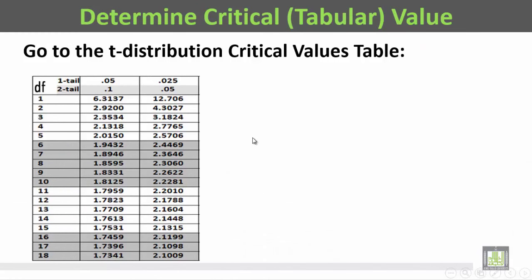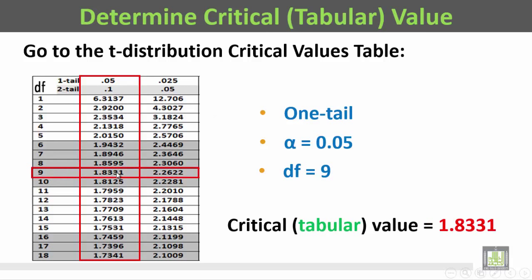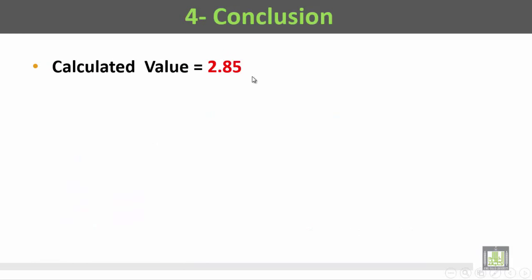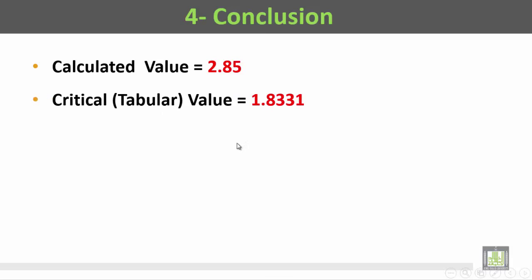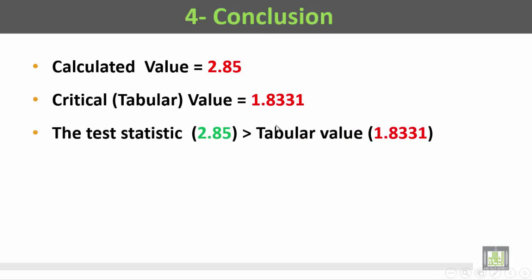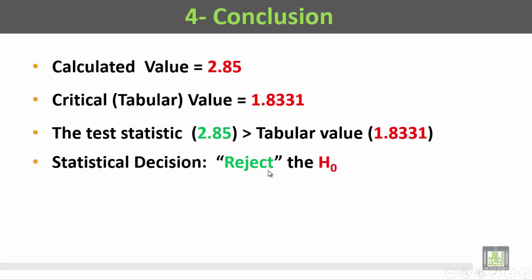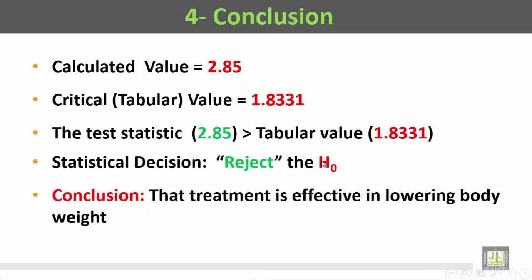Then we determine the degrees of freedom: n minus 1, which is 10 minus 1 equals 9. Lastly, we determine the critical tabular value to compare with the calculated value. With 1-tail, alpha 0.05, and degrees of freedom 9, the critical value is 1.8331. The calculated value 2.85 is more than the tabular value 1.8331, so the statistical decision is to reject the null hypothesis. Conclusion: the treatment is effective in lowering body weight.